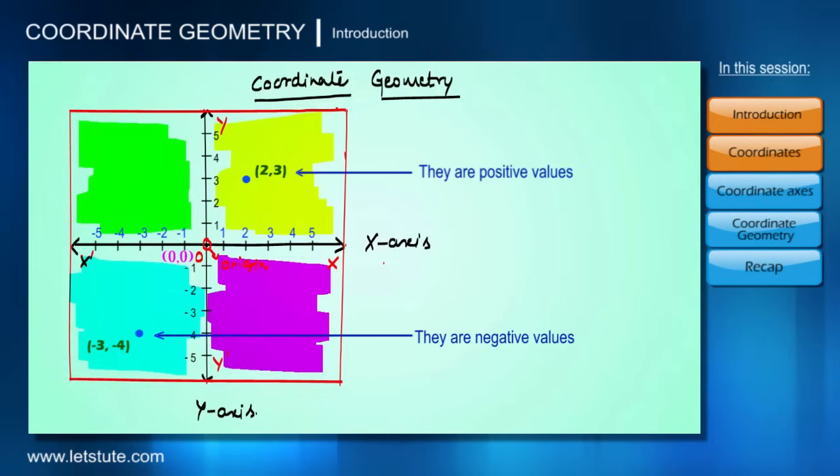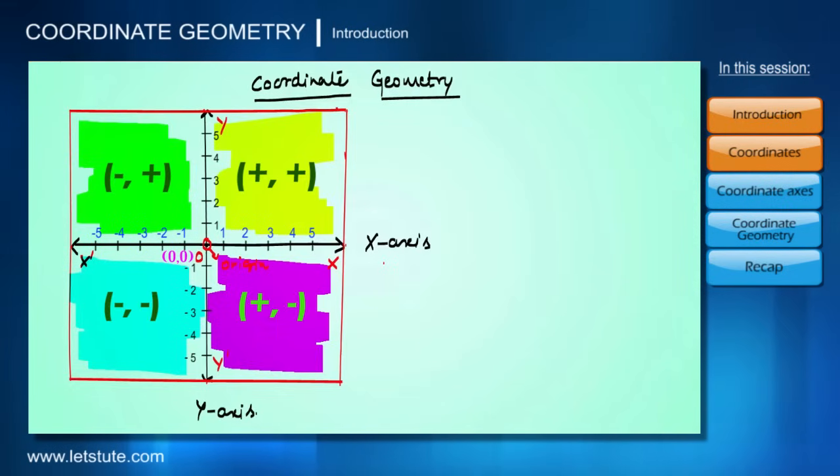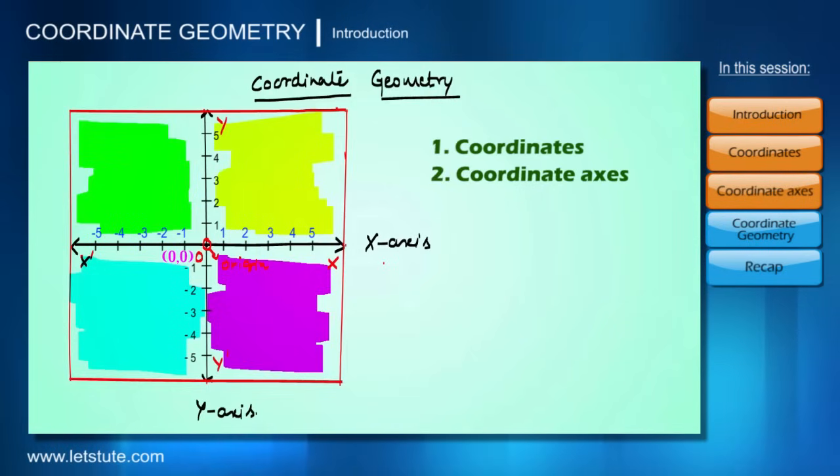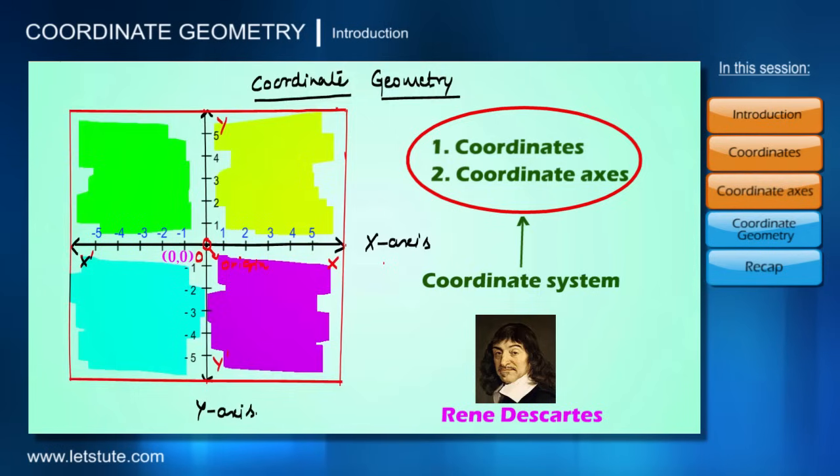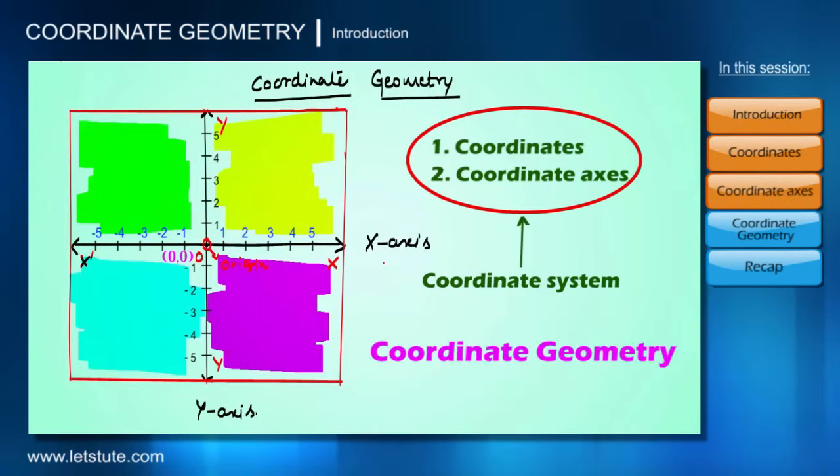The sign of coordinates depends on the quadrant in which they exist. These two reference axes, the x-axis and y-axis, are called coordinate axes. This whole system is called the coordinate system, given by the great French mathematician René Descartes. Therefore, this coordinate system is named after him as the Cartesian coordinate system. When concepts of the coordinate system are used in geometry, it is called coordinate geometry.